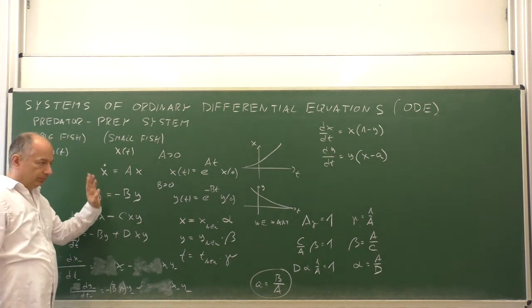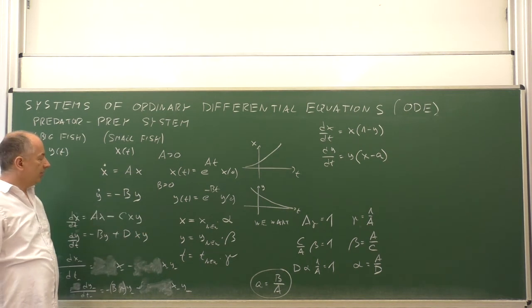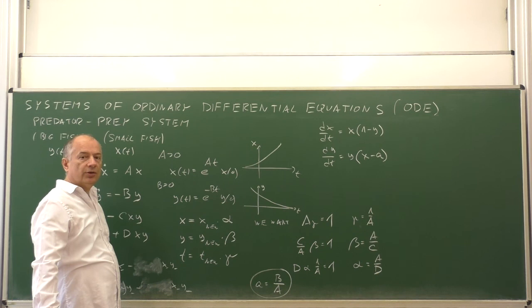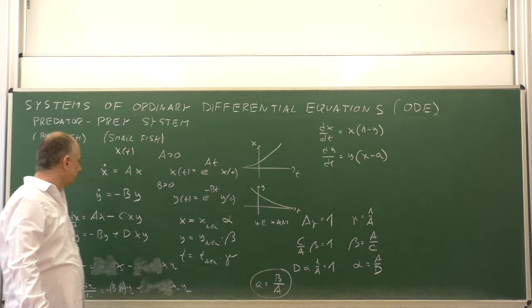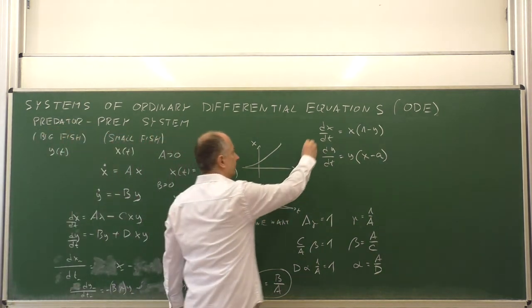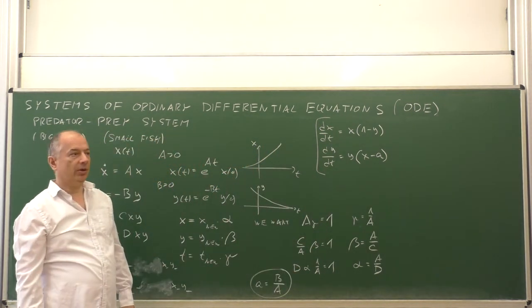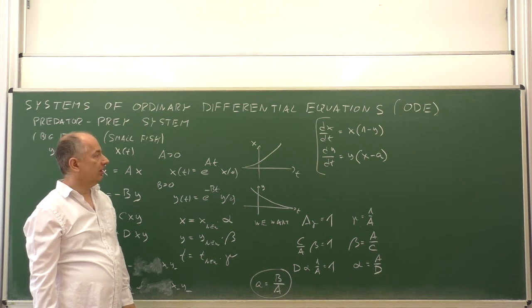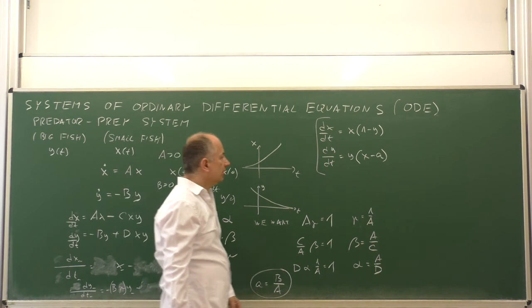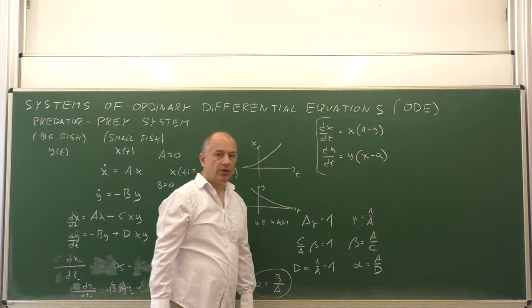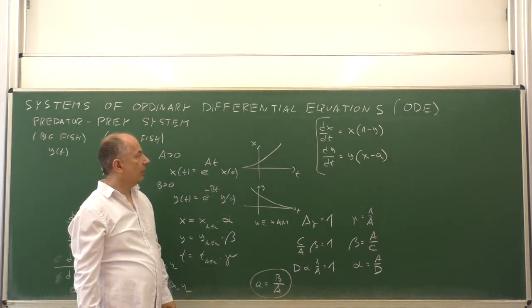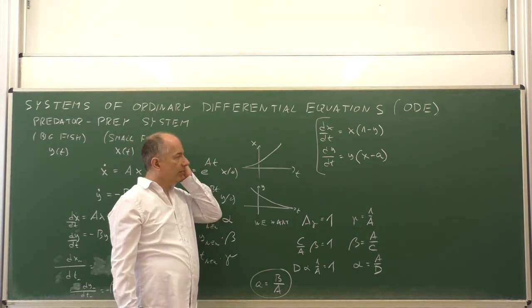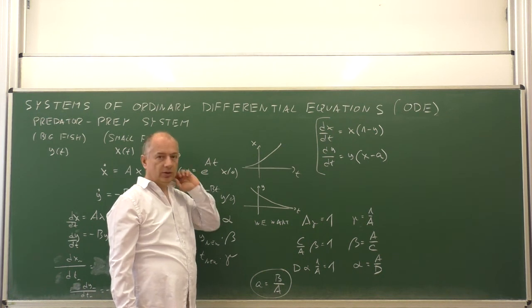Letting t, x, and y always denote the rescaled values and forgetting the tilde notation, we can write the system as dx/dt = x(1 - y) and dy/dt = y(x - a). This was the first interesting result: how to rescale the variables so that we reduce the number of parameters — a very useful trick done in chemical engineering and physics very often. The predator-prey system now consists of two first-order autonomous differential equations, with no explicit time t on the right side. But unfortunately the equations are nonlinear, since we multiply the variables together. So this is a system of nonlinear ordinary differential equations.